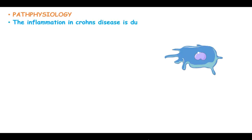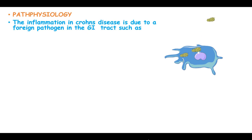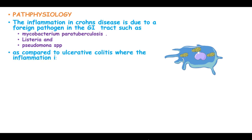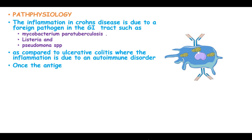The inflammation in Crohn's disease is due to a foreign agent in the gastrointestinal tract, such as mycobacterium paratuberculosis, Listeria, and Pseudomonas species. This is in contrast to ulcerative colitis, where the inflammation is due to an autoimmune disorder.